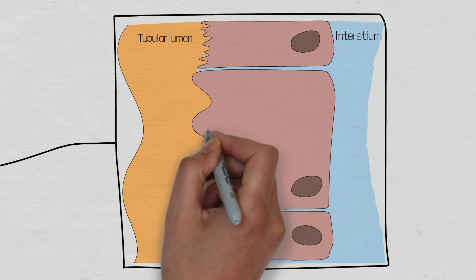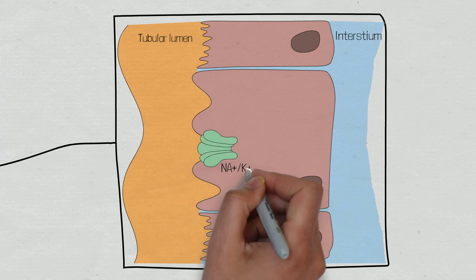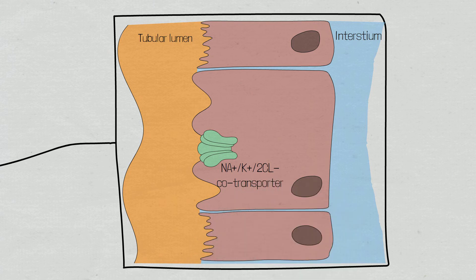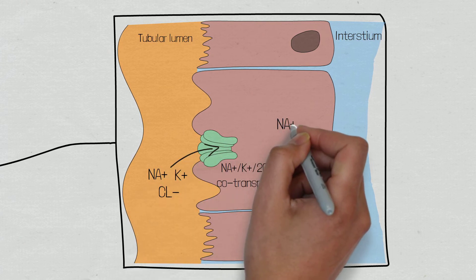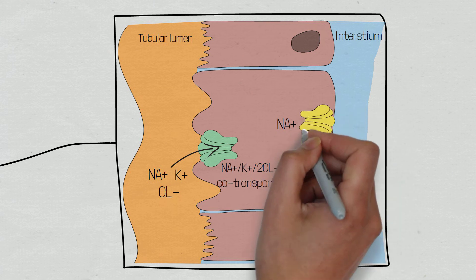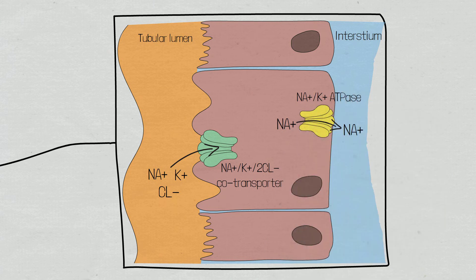A transporter that plays a key role in this reabsorption of solutes is the sodium-potassium-2-chloride co-transporter. As the name implies, this co-transporter is responsible for the reabsorption of sodium, potassium and chloride from the tubule. Once within the cell, sodium will be pumped out into the medulla through the sodium-potassium pumps, contributing to the osmolality or saltiness of the medulla, which will in turn draw water from out of the descending limb of the loop of Henle.